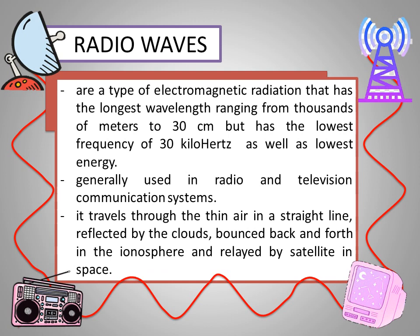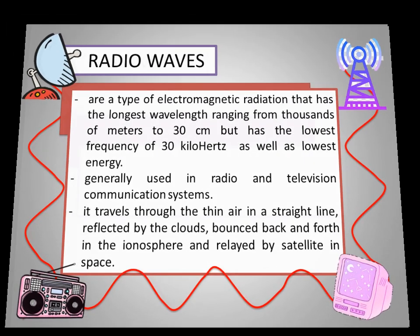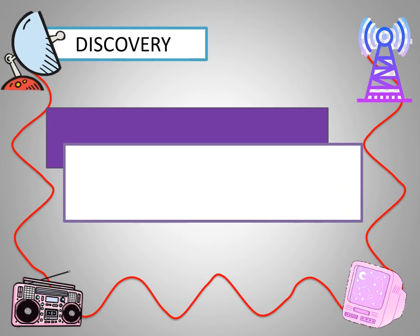It travels through the thin air in a straight line, reflected by the clouds, bounces back and forth in the ionosphere, and is relayed by satellite in space. So how was the radio wave discovered?